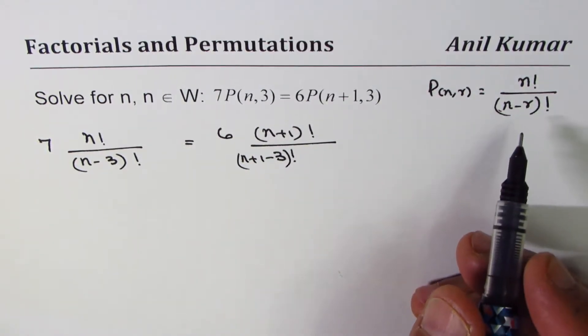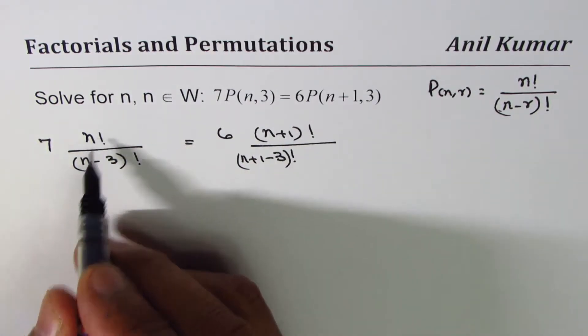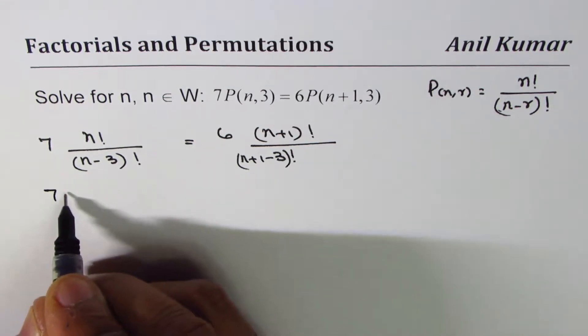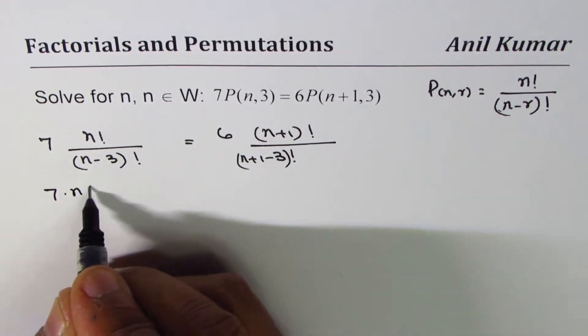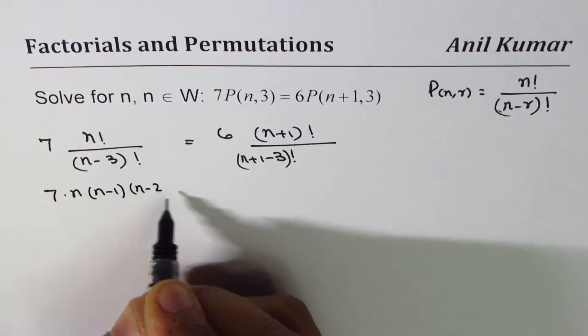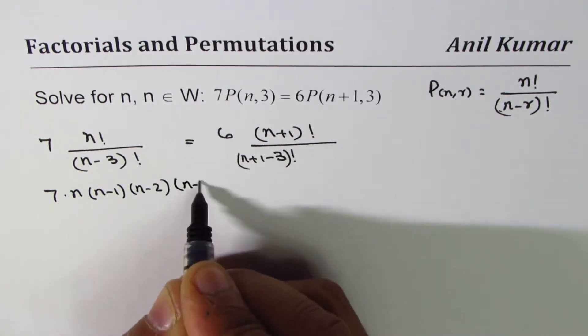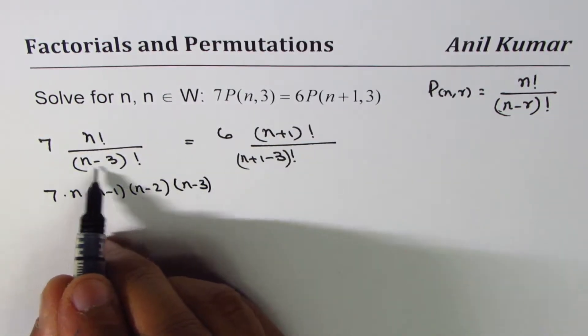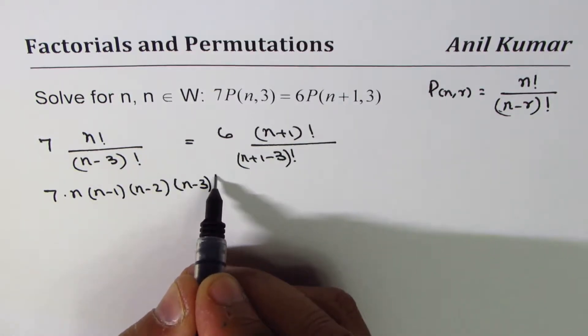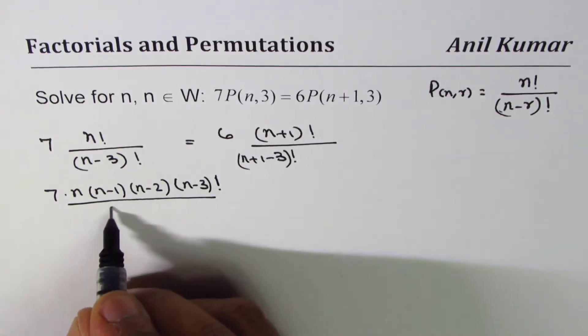Now let's expand n factorial. We get 7 times n times (n-1) times (n-2) times (n-3) factorial. Since we have (n-3) factorial in the denominator, we'll stop here and cancel them out.